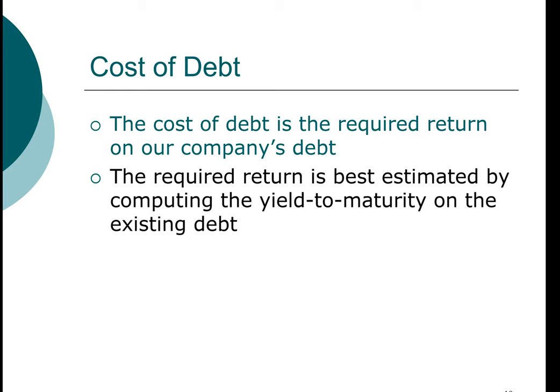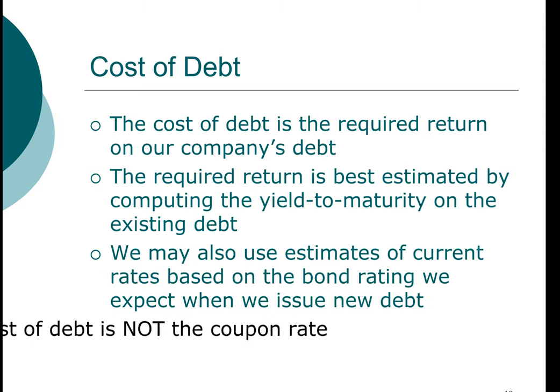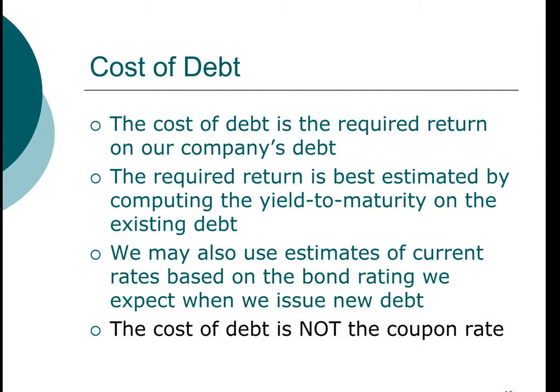One of the best estimates is if the company is going to issue or use new bonds to finance a project, then the yield to maturity — which is the current market interest rate for the company's existing debt — is the best estimate. Another approach is using the yield to maturity based on the bond rating that we expect when we use new bonds, depending on the particular situation of the company. But in either case, yield to maturity is the interest rate we want to use.